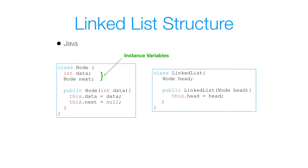The next thing is a linked list class. In my linked list class, I still have that head reference like I spoke about previously. I have my linked list constructor that takes in an argument's head and initializes my instance variable head to that argument's head.